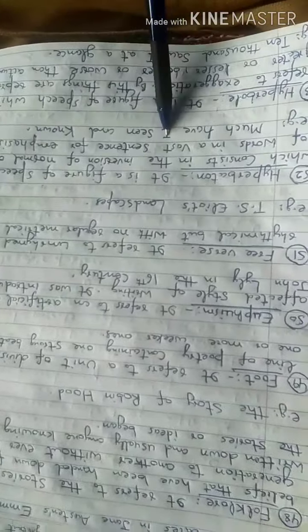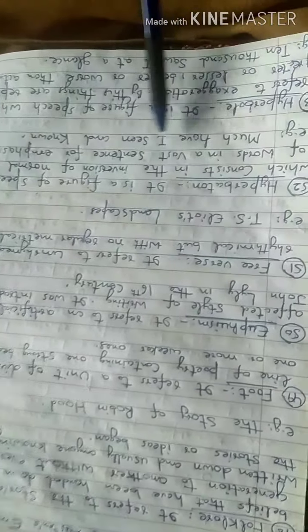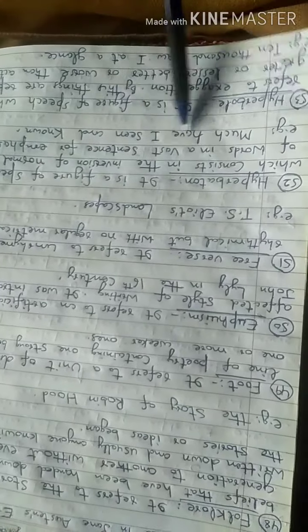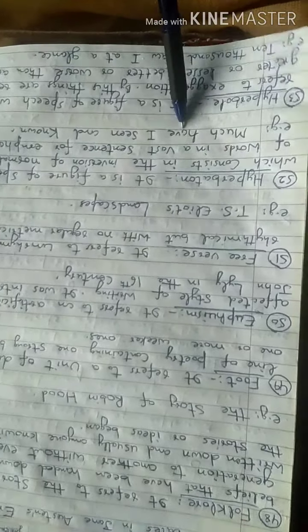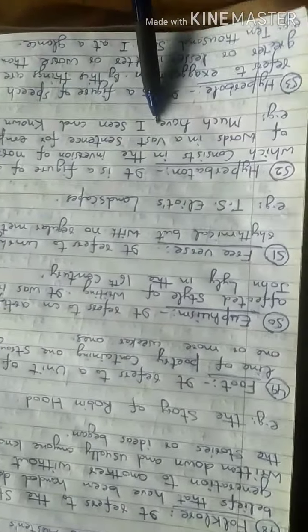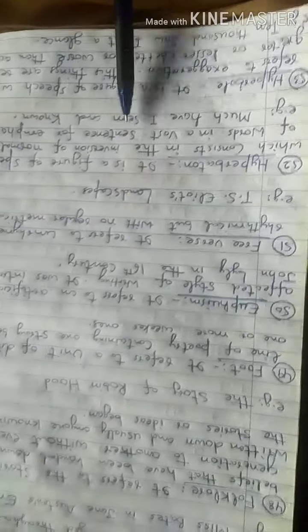The normal order would be 'I have seen and known much,' but by placing 'have' before the subject 'I', it creates hyperbaton to better emphasize the meaning.